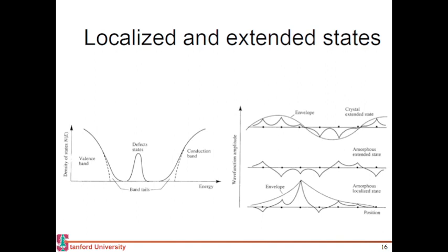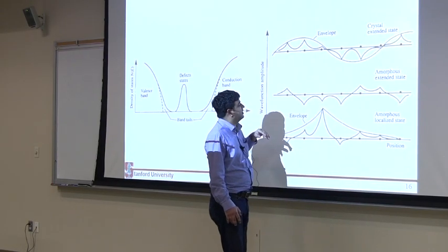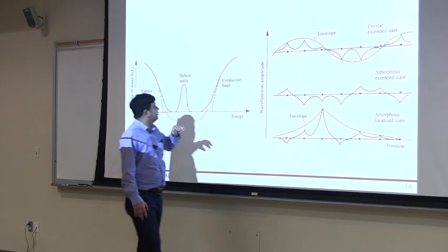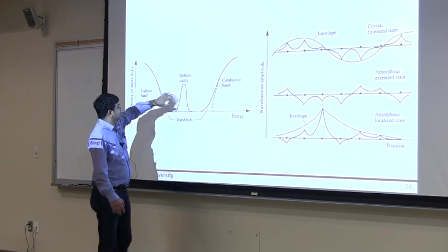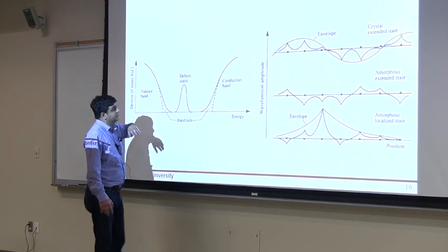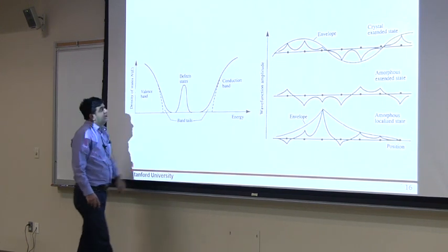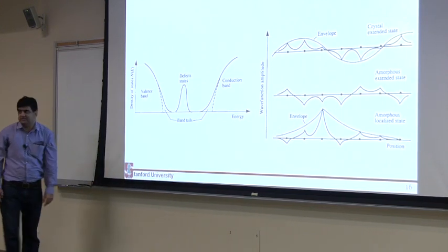This is the wave function in amorphous materials. You will have the actual wave function, but you can still represent it because of that continuous random network as an envelope plus these perturbations around that envelope. That envelope results in these conduction and valence bands as you see in crystalline material. But because of those random perturbations, you get these tail states and defect states in the middle.